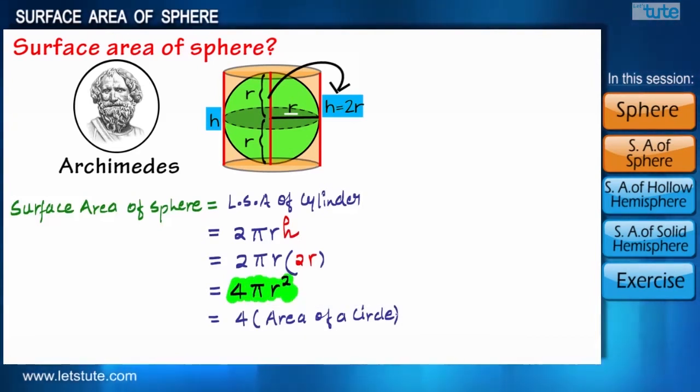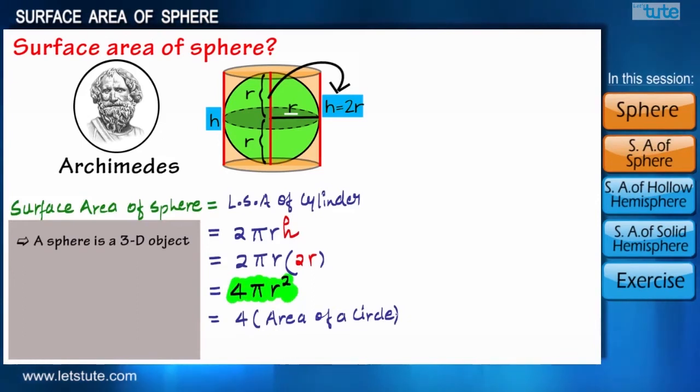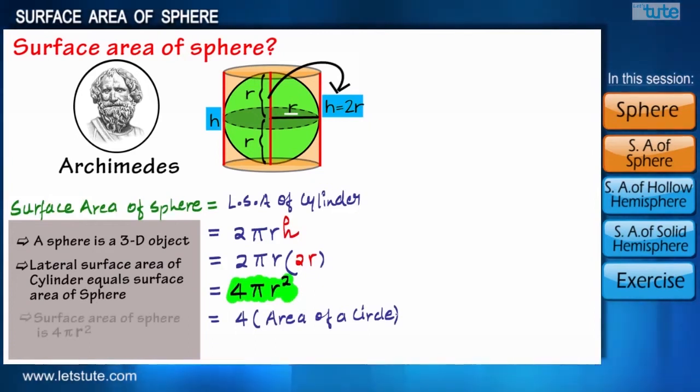Okay, so let's see what you have learned till now. We learned that a sphere is a 3-dimensional object and the lateral surface area of a cylinder is equal to the surface area of a sphere, which is calculated by the formula 4πr², which we also say is 4 times the area of a circle.